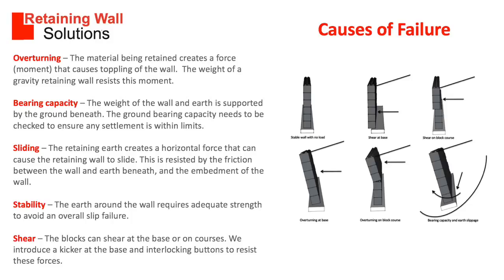Sliding: the retained earth creates a horizontal force that can cause the retaining wall to slide. This is resisted by the friction between the wall and the earth beneath and the embedment of the wall.